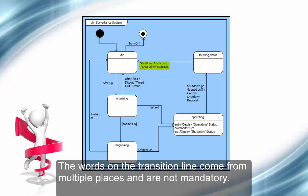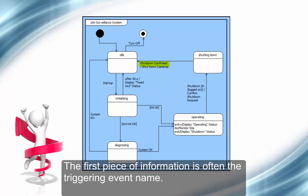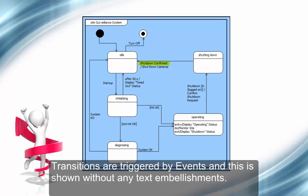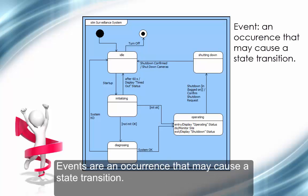The words on the transition line come from multiple places and are not mandatory. The first piece of information is often the triggering event name. Transitions are triggered by events, and this is shown without any text embellishments. Events are an occurrence that may cause a state transition.